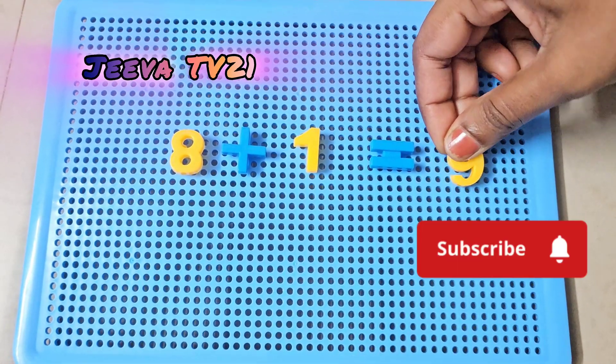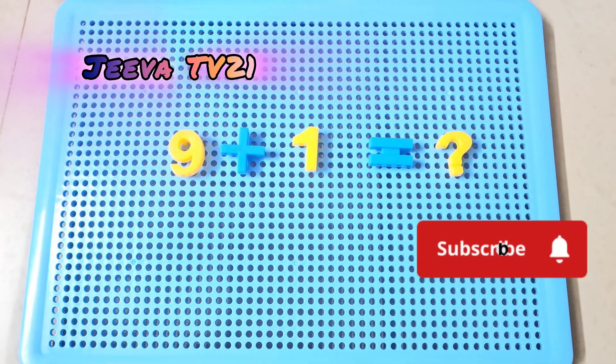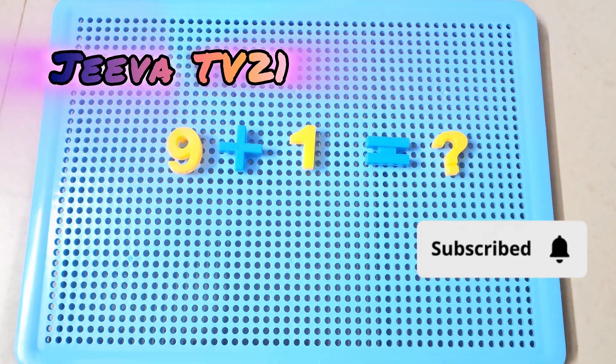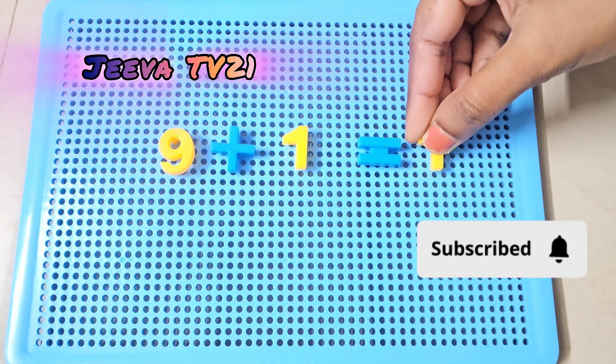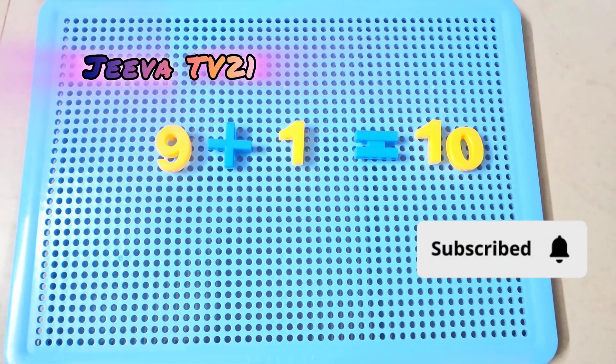is 9. Now you may wonder what's 9 plus 1. 9 plus 1 gives us the first double digit number, which is 10.